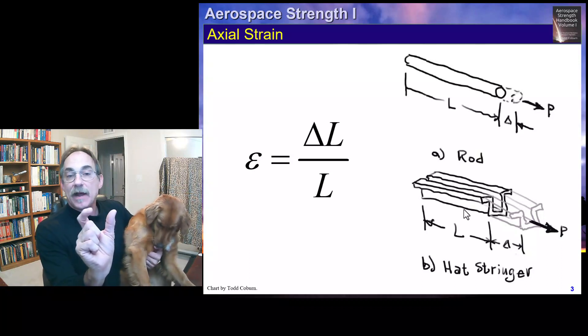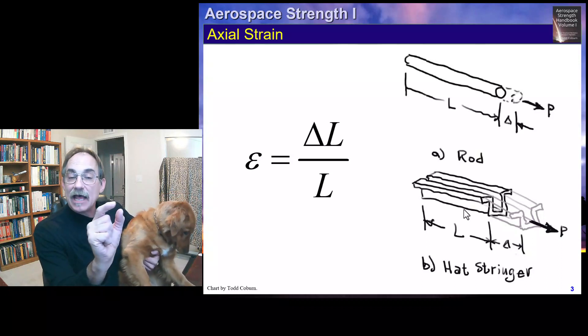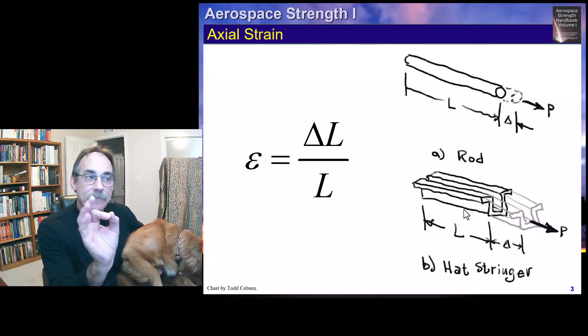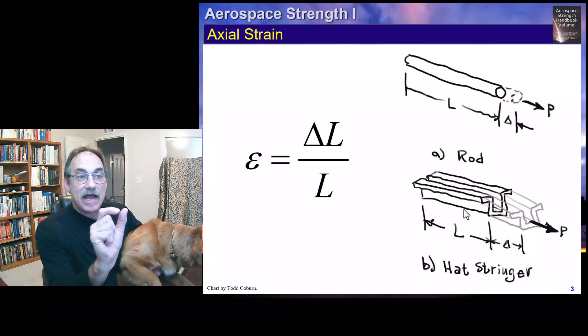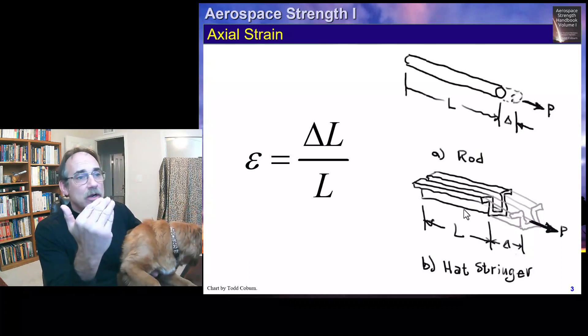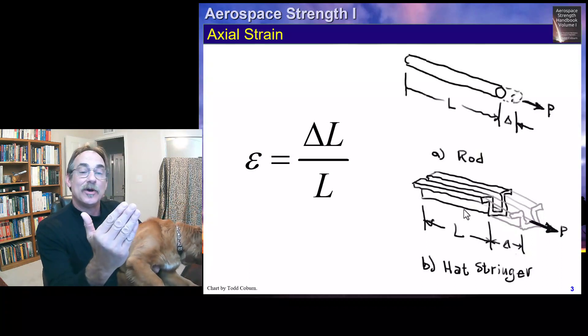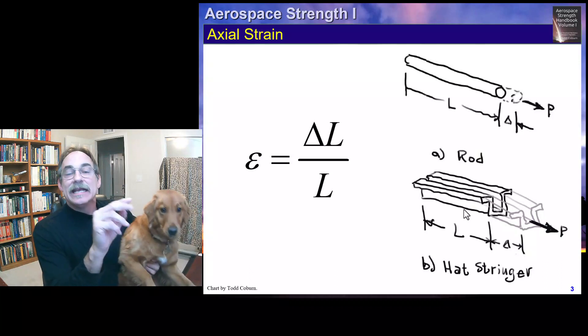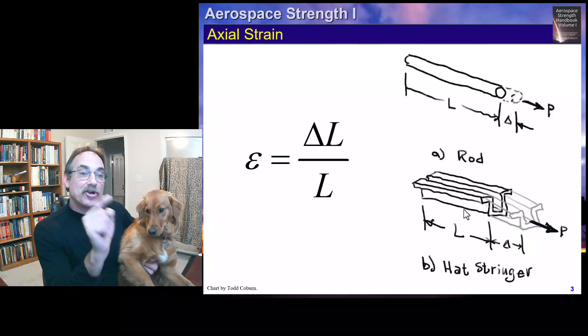Strain is the deflection divided by the original length. We use delta L over L—that deflection divided by original length. Whether you have a rod or a stringer, if we have an axial load, the strain is delta L over L. Make sure you understand this formula and can pull it out of memory.